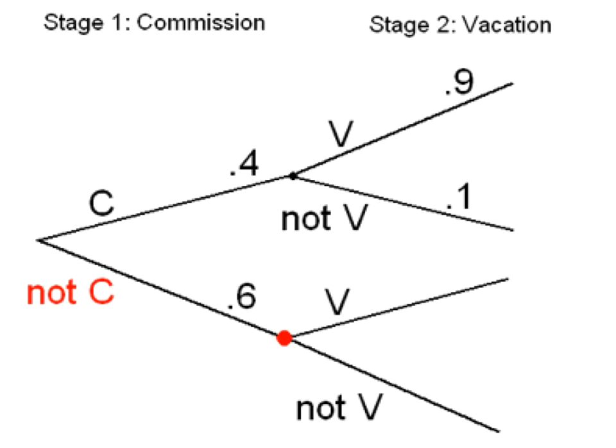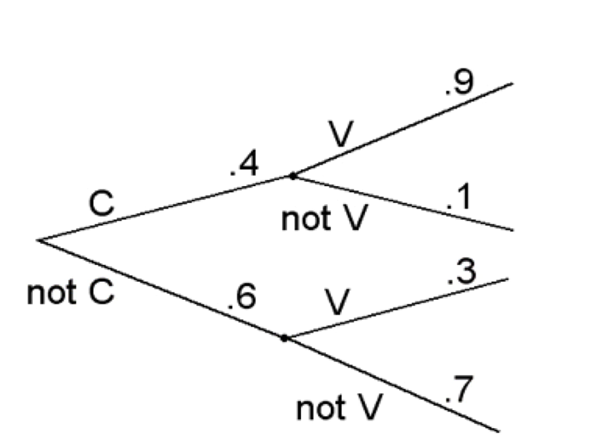Similarly, if event not C occurs in stage 1 — in other words, if the sales representative does not get the commission — a second branch off represents the two options in stage 2. The sales rep either takes the vacation or not. We are told that in this case, the probability that the rep will take the vacation is only 0.3, which means by the complement rule that he will not take the vacation with probability 0.7. Here is the completed probability tree.